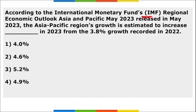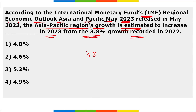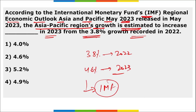According to IMF's Regional Economic Outlook for Asia and Pacific released in May 2023, the Asia-Pacific region's growth is estimated to increase to 4.6% in 2023, up from 3.8% recorded in 2022. The IMF is headquartered in Washington D.C.